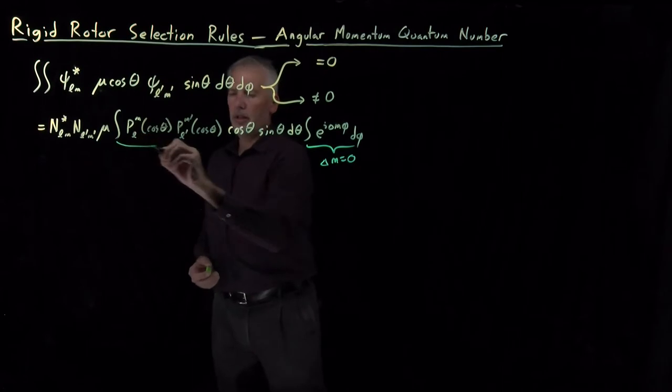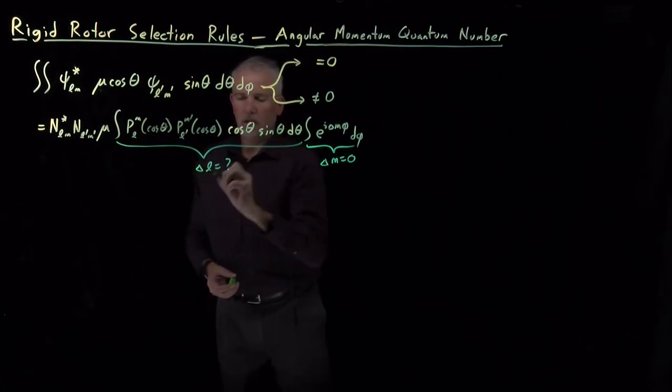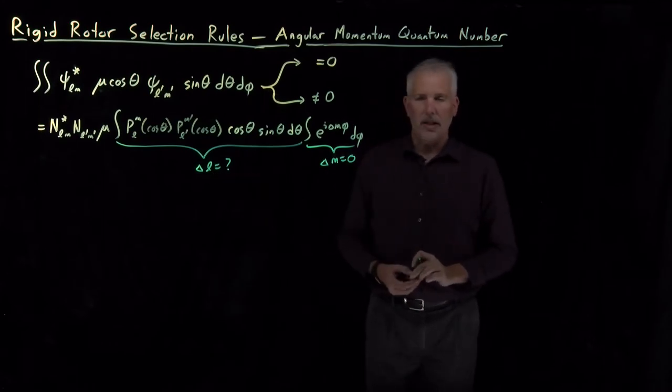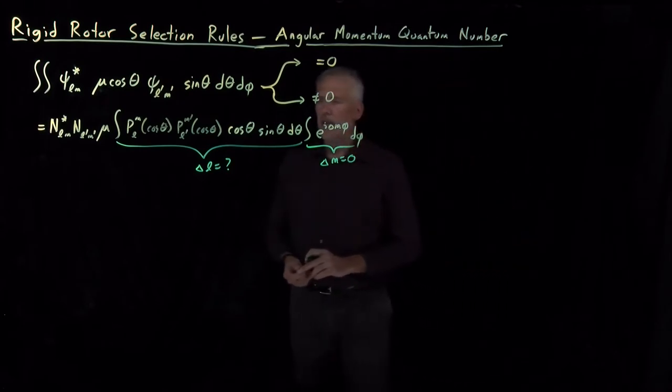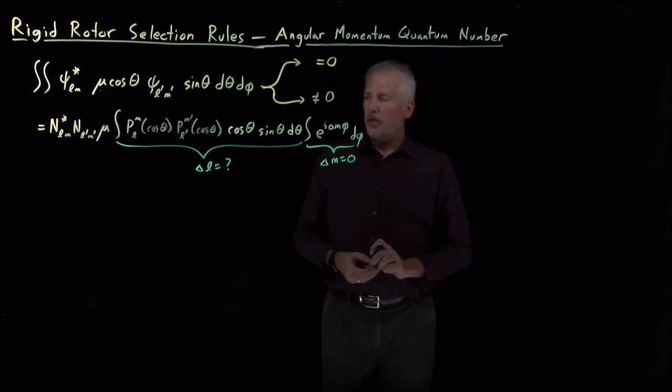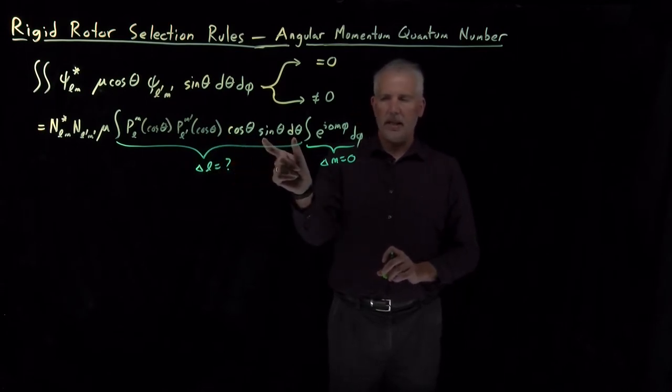The next question is, for this more complicated looking integral, by how much is the angular momentum quantum number L allowed to change? So we'll focus on this theta integral. We can immediately make this integral simpler. We see the Legendre polynomials in this cosine theta term, those all depend on cosine theta, and the integration variable is sine theta d theta.